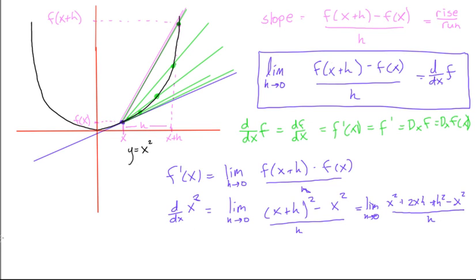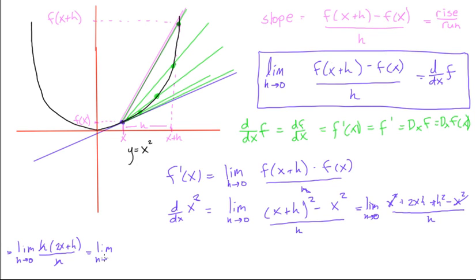Coming down here, we still leave the limit as h goes to 0 because we can't substitute yet. Now, see this x squared minus x squared? Those cancel out. And 2xh plus h squared — we can factor out an h, giving h times (2x + h), all over h. We can cancel out the h in the numerator with the h in the denominator. So now we have the limit as h goes to 0 of 2x + h. Now we can substitute in values approaching 0, and we find that this equals 2x.